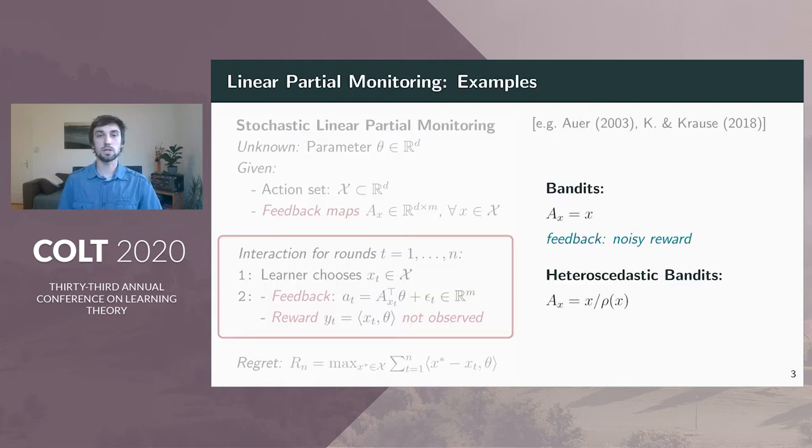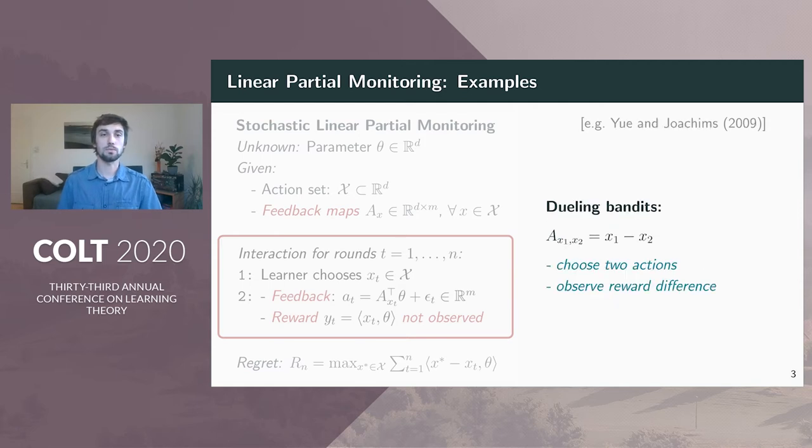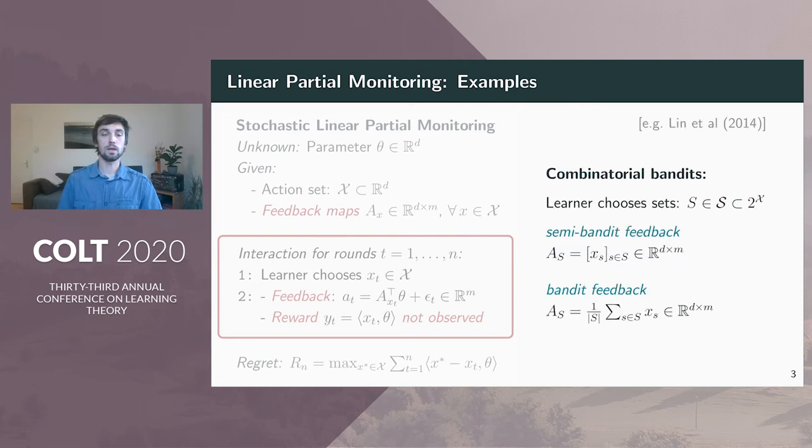Of course, linear bandits are just a special case, where the feedback is the same as the reward. We can also model heteroscedastic bandits, where the signal-to-noise ratio depends on the actions. Other types of feedbacks are also possible, for example, dueling bandits, where the learner chooses two actions and observes the reward difference.